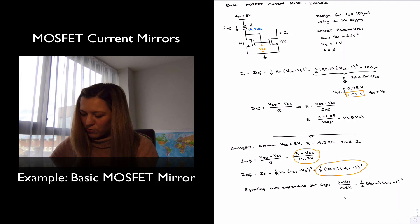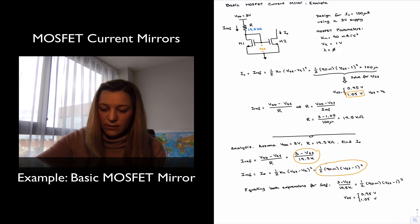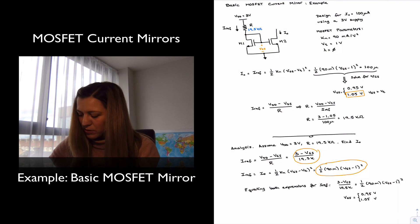I could solve for VGS. I should get the same values, 0.95 and 1.05 volts. I will select the second one for the same reasons as above. It's the one that is greater than the threshold voltage.